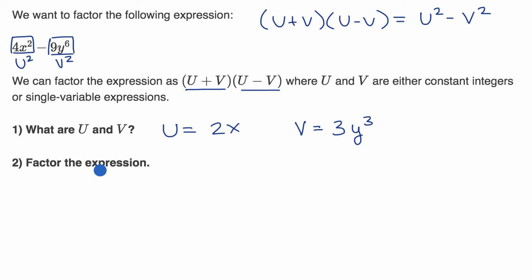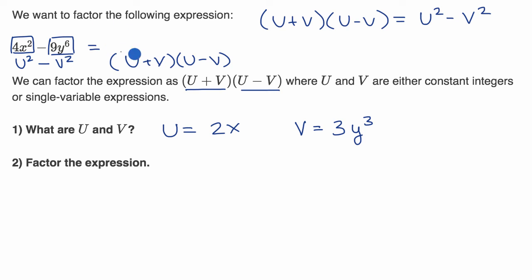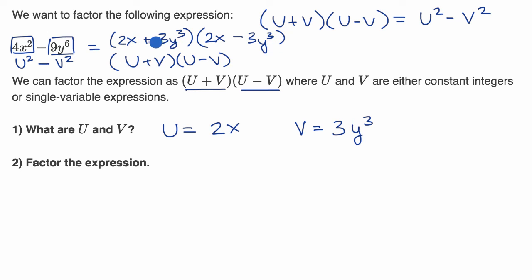We can use that to factor the expression. This right here is the same as u squared minus v squared, so we can factor it as u plus v times u minus v. So u plus v equals two x plus three y to the third, and u minus v equals two x minus three y to the third. And we're done.